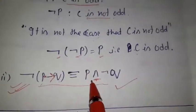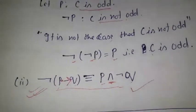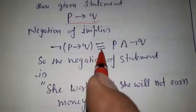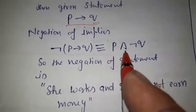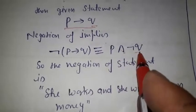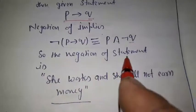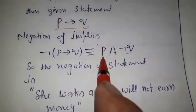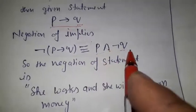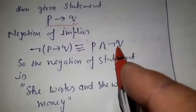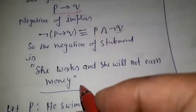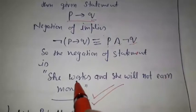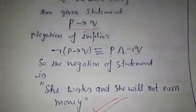Now the negation of P implies Q — using the property we studied — is P and not Q. So in symbolic form, negation of (P implies Q) is P and not Q. In language form: P means 'she works' and not Q means 'she will not earn money'. So the negation is: 'She works and she will not earn money.' This is the negation of the implication statement.